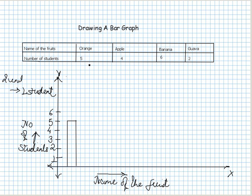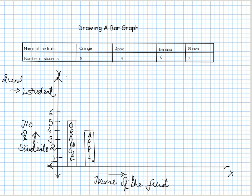I am representing the number five and associating it with orange — five students are interested in orange, so I will write orange below this bar. The next fruit is apple. Four students would like to eat apple, so let's draw that bar of length four. This bar is for apple.